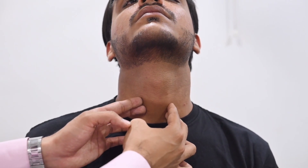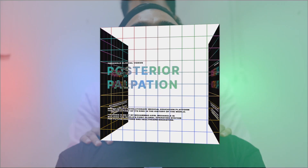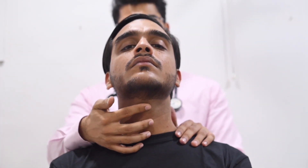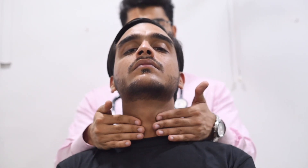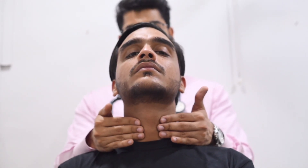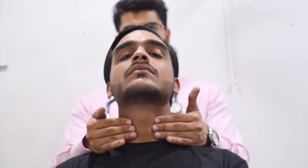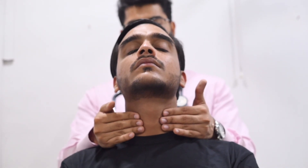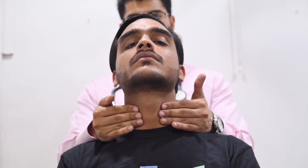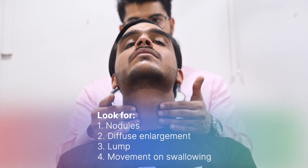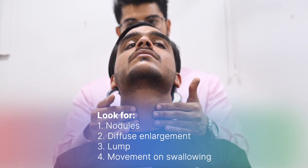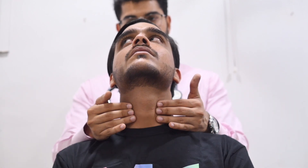Once this is done, we can now move to posterior. We will now palpate the neck from behind. For palpation of the neck from behind, we will follow the same protocol and trace the origin of the thyroid gland. Once we have done that, we will palpate for both lobes. Can you swallow for me? And assess for movement with swallowing. We will also look for any nodules, any consistency, and for enlargement of the thyroid.